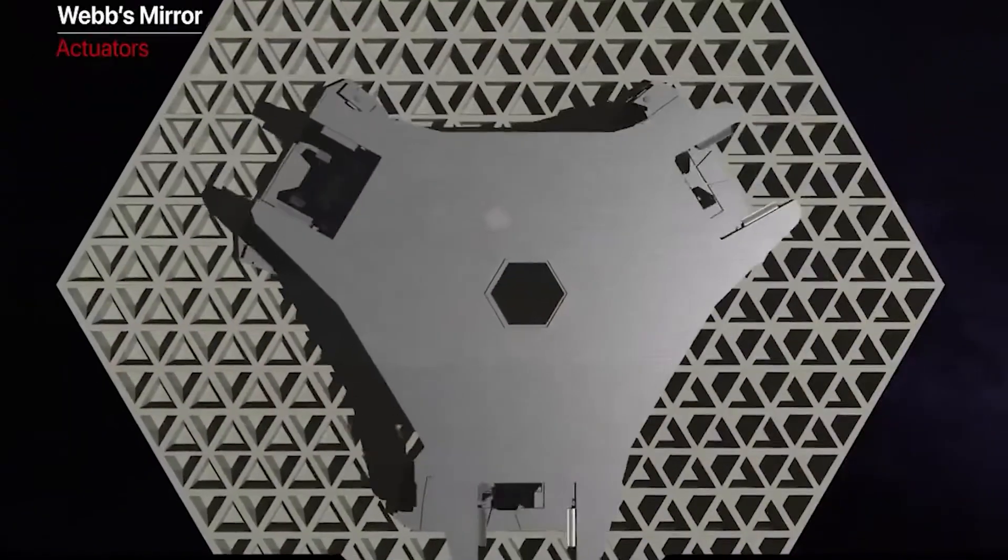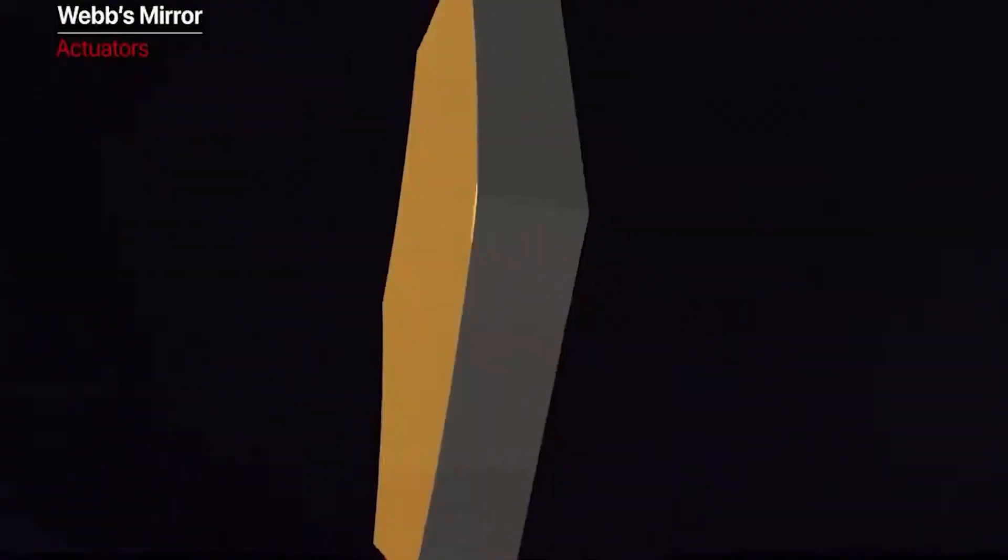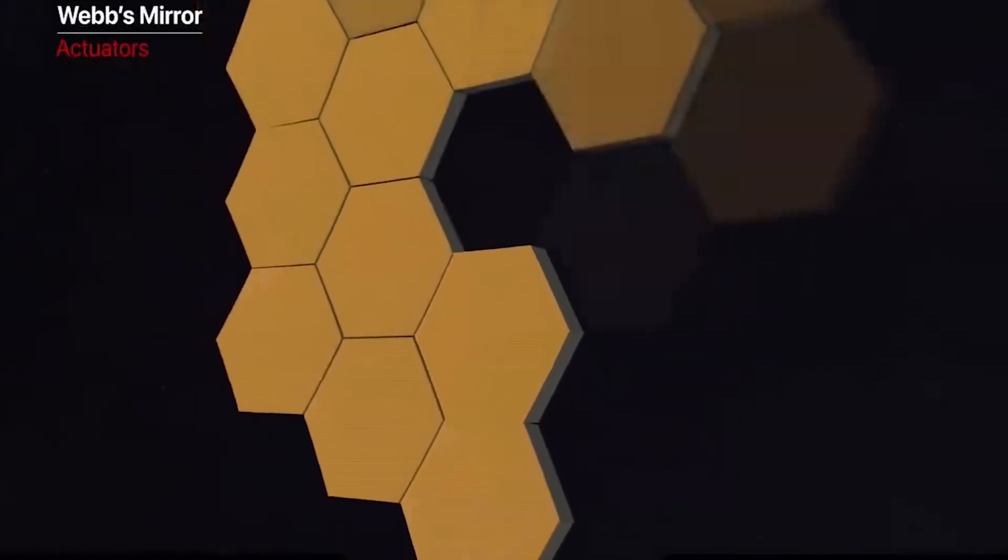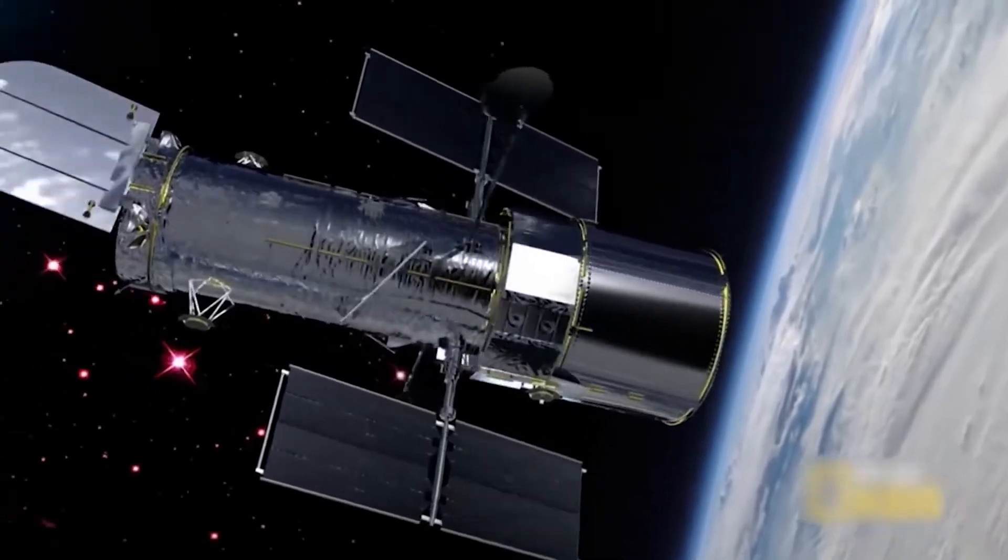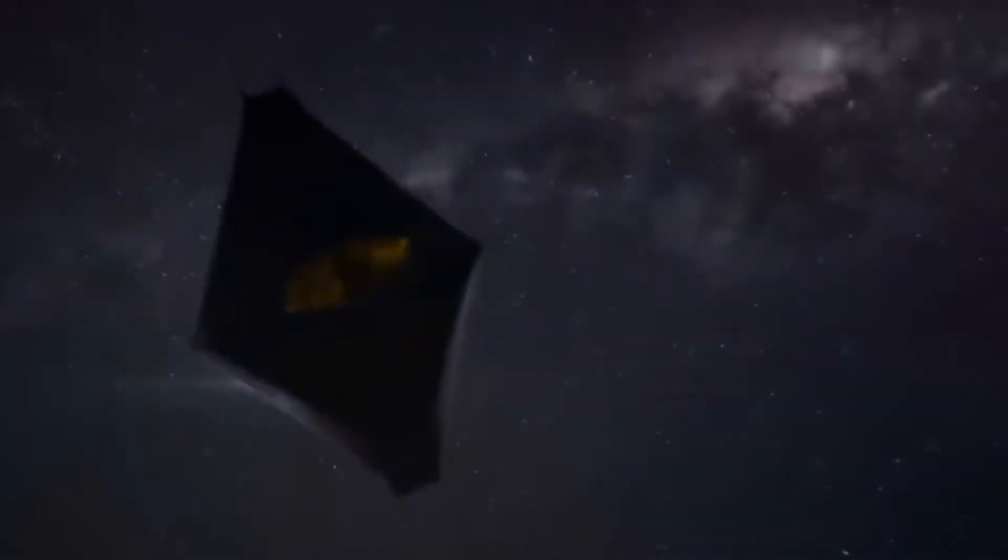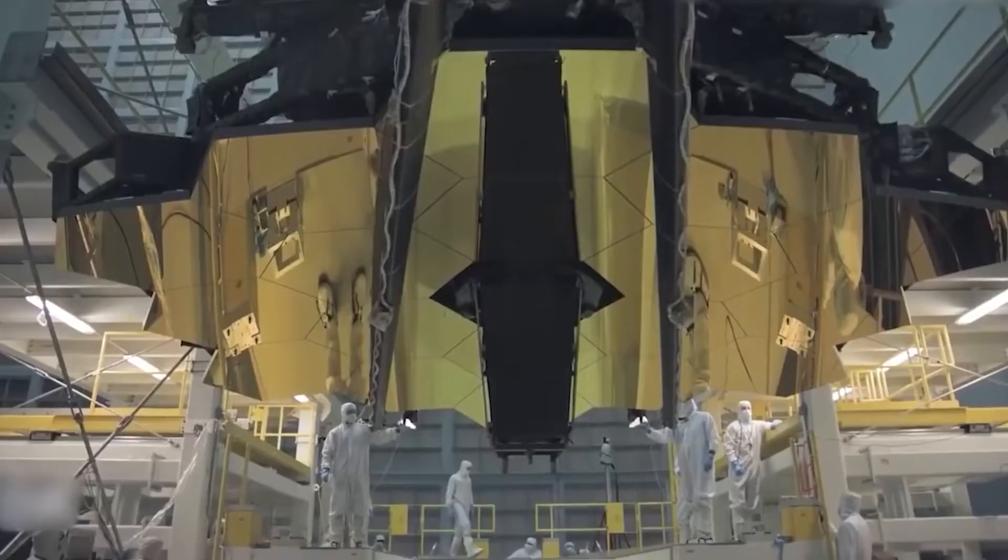Using its 21-foot gold-plated mirrors, the telescope will look for the first stars' lights billions of years ago. The gold-plated mirrors on the JWST have a total diameter of 6.5 meters, which is much larger than Hubble's 2.4-meter diameter plates. Overall, the JWST will provide a view that is roughly 15 times broader than the Hubble Space Telescope.